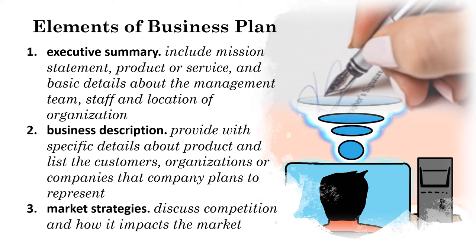The elements of a business plan include the executive summary, which lets the reader know what the company is and why it's going to succeed. This includes the mission statements, the products or service, and the basic details about the management team, the staff, and the locations of the organizations. It also provides the financial details and higher-level development strategies that you plan to apply for funding.